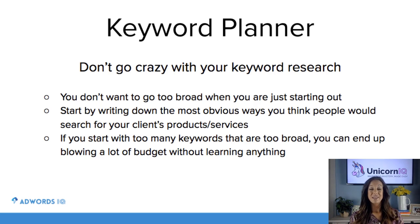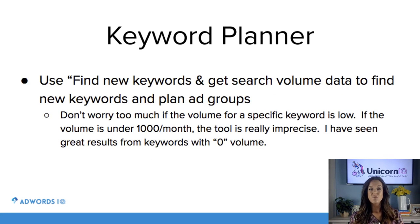You can always come back later and add in more keywords. Don't worry too much if the volume for a specific keyword is low. If the volume is under a thousand a month, the tool just starts getting really imprecise. So I'll give you that word of warning now: even if it says there's zero, 10, or 50 searches, you can still get a decent amount of clicks from those keywords.